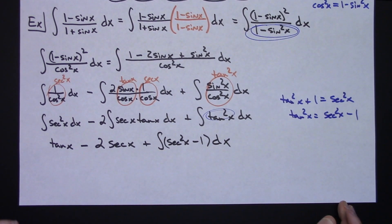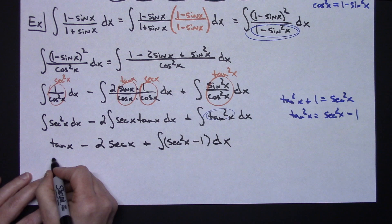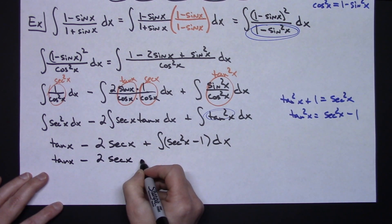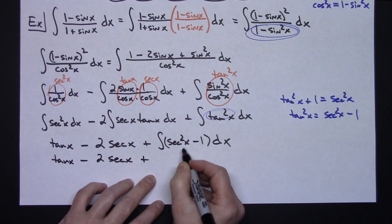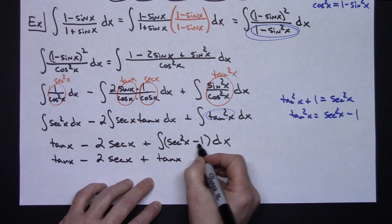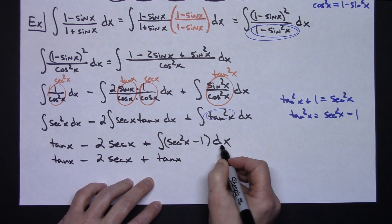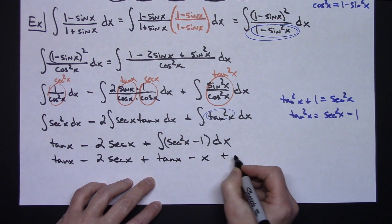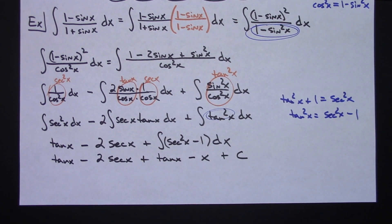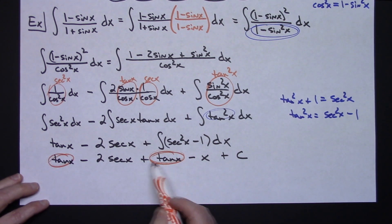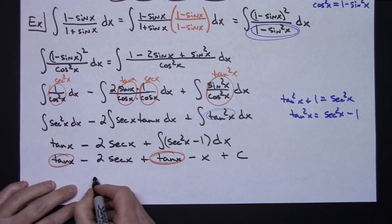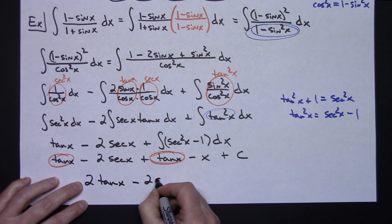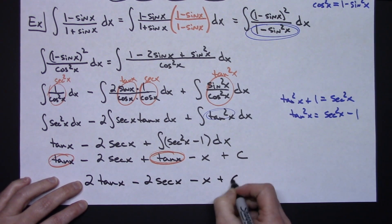We're getting pretty close now. Keeping tangent x minus 2 secant x, and then integrating secant squared x gives another tangent x, while integrating 1 with respect to dx gives minus x. So adding the constant of integration, plus C, and combining like terms, the final answer is 2 tangent x minus 2 secant x minus x plus C.